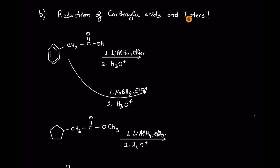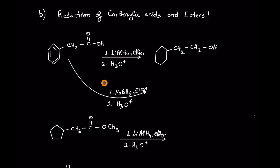Let's move to the reduction of carboxylic acids and esters. With carboxylic acids and esters we must use lithium aluminium hydride — they do not react with sodium borohydride, they need a more reactive reducing agent. The solvent is going to be ether because lithium aluminium hydride in water is going to explode. In this case we are going to yield a primary alcohol.